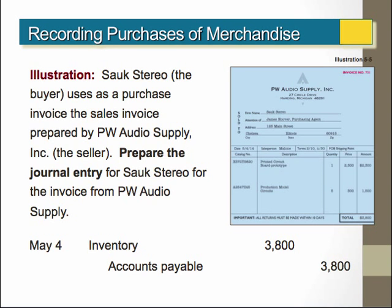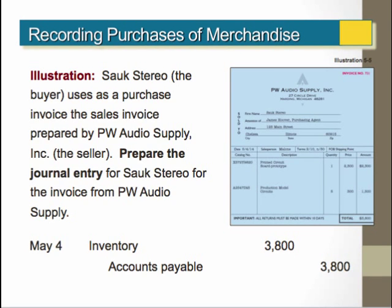Here is an example of the journal entry that needs to be made when we acquire inventory. This invoice prepared by PW Audio Supply invoices the buyer for the acquisition of inventory in the amount of $3,800. In following the cost principle, we would recognize the purchase of the inventory at cost. Therefore, we would do a journal entry showing a debit to inventory of $3,800 and a credit to accounts payable for $3,800. The inventory account is an asset account and the accounts payable account is a liability account.